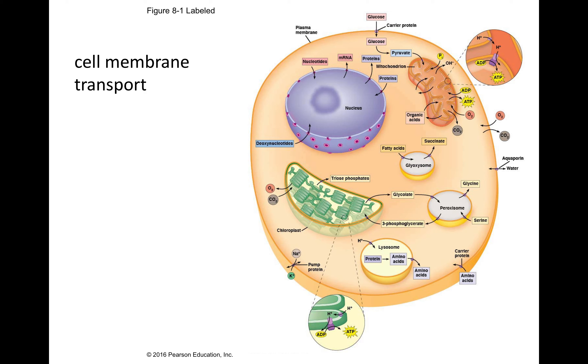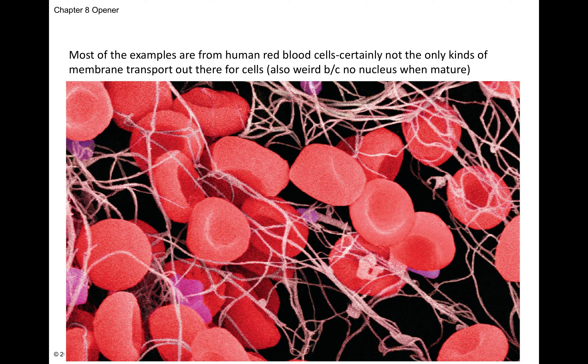This is a lot of how cells work — moving something across a membrane. Most of the data from which these principles come from comes from studying human red blood cells, simply because they're easy to collect, they can be collected non-destructively, meaning that you don't kill the person. But they're certainly not the only kind of membranes out there. They're also weird cells because when they're mature they don't have a nucleus.